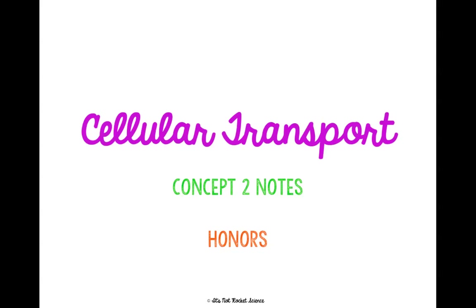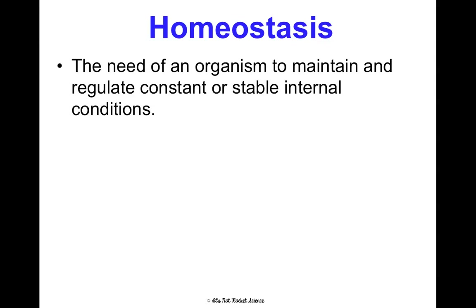Okay, honors students, we're going to be talking through concept two notes, which is cellular transport. Cellular transport is critical to understand because it is how your body maintains something called homeostasis, which is the need of an organism to maintain and regulate constant or stable internal conditions. This is how your body keeps its internal environment, your cell's environment, stable, which is so important.